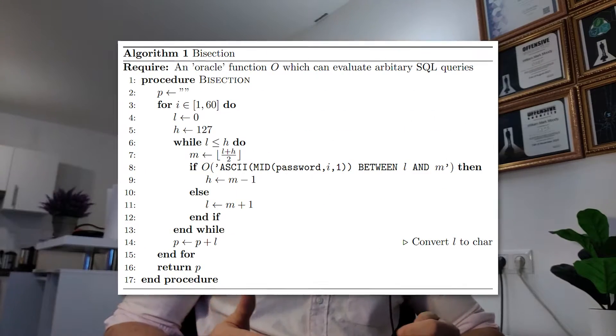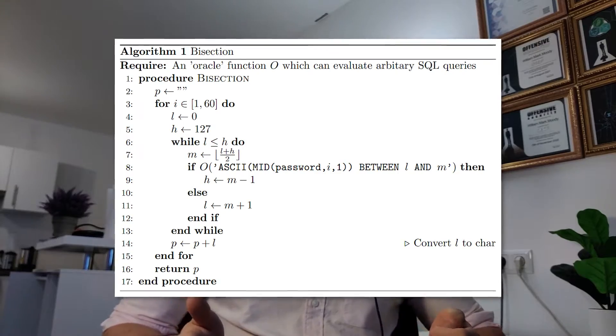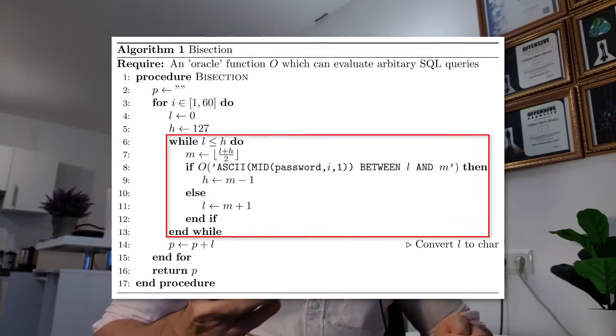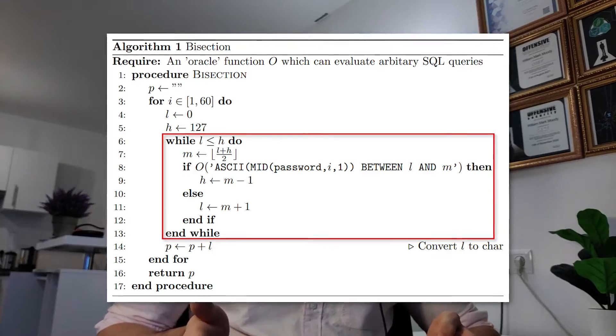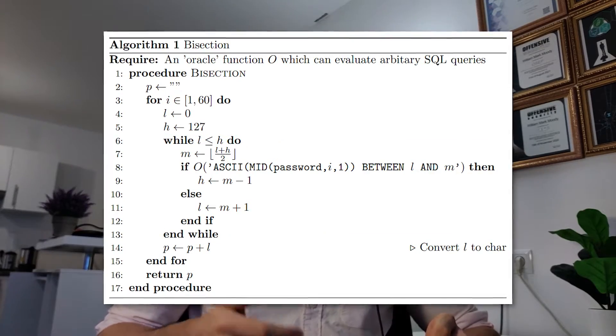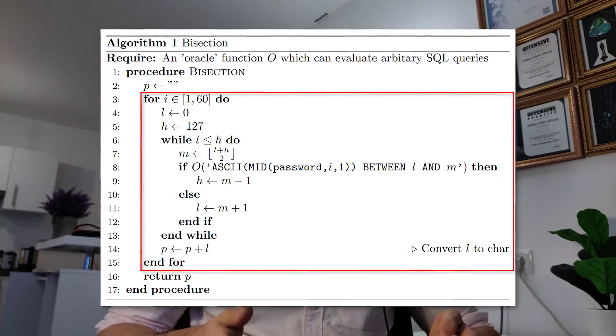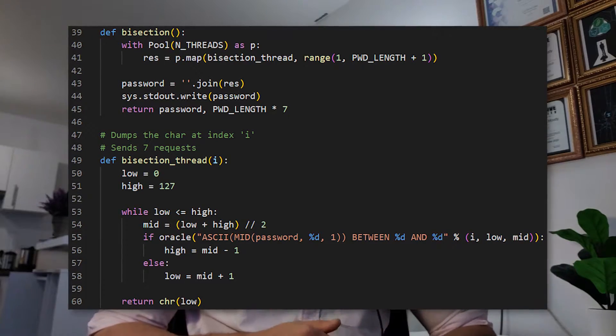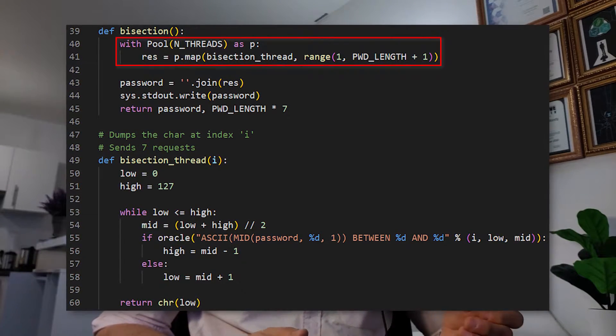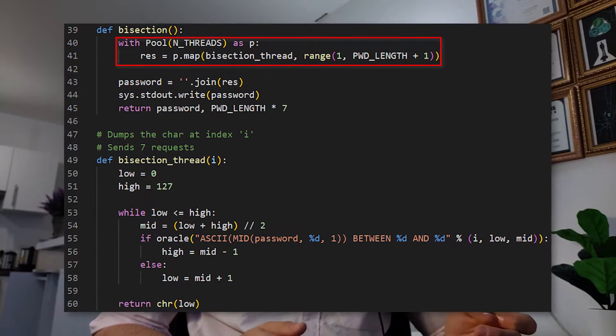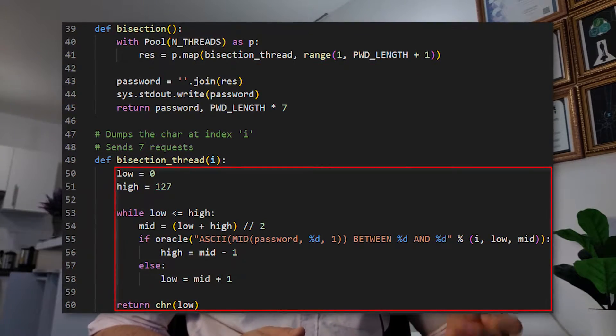The bisection algorithm is fast. The problem however is that the 7 requests inside the inner while loop depend on each other and must therefore be run in order. This means that only the outer loop can be parallelized. This is how I implemented it in Python. I used a thread pool to parallelize the outer for loop, and the inner while loop remains the same.